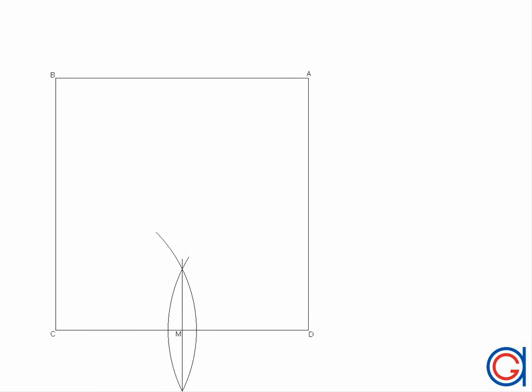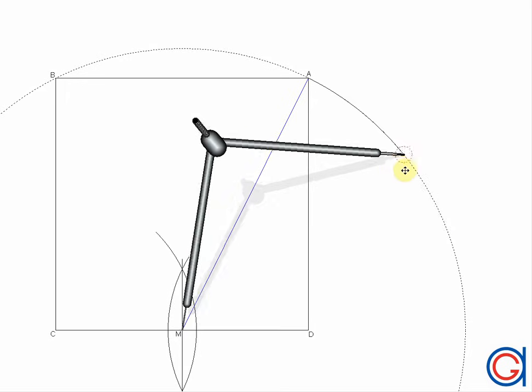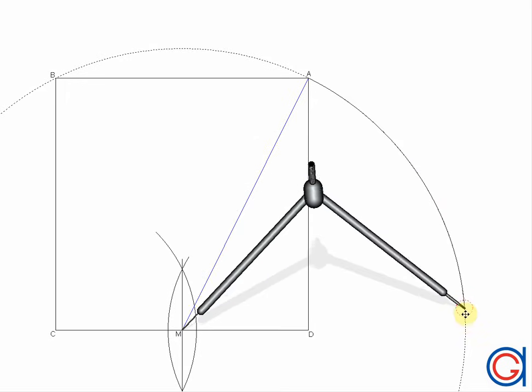The next step is to join our midpoint M to point A on the square. With our compass set on M and radius MA, we are going to scribe an arc to the right, which passes the base of our square, as can be seen here.